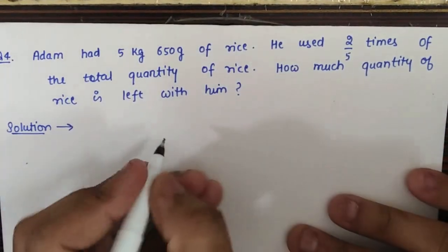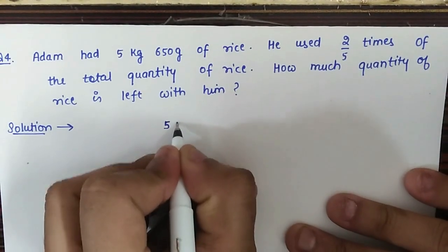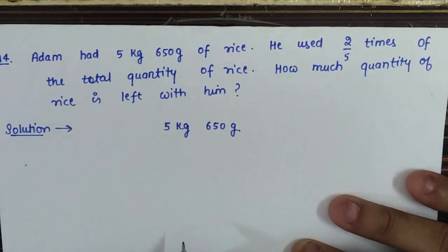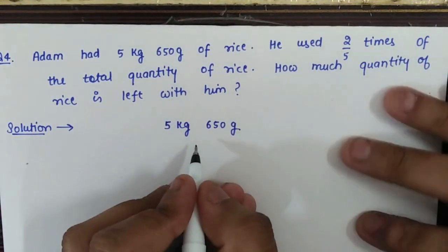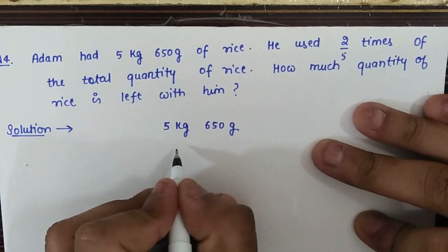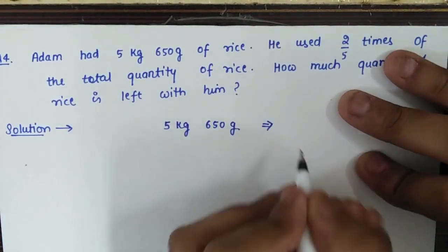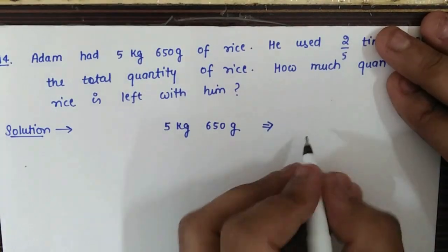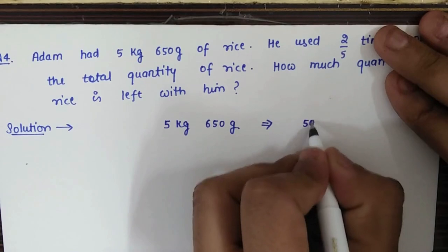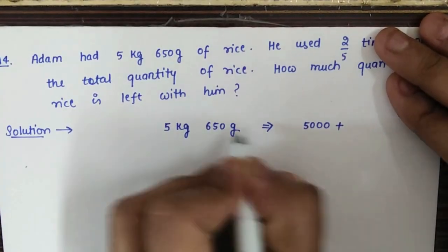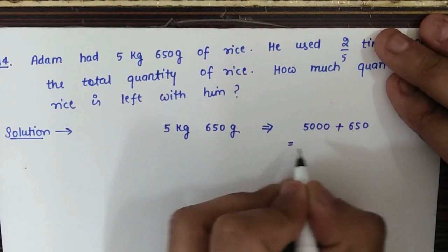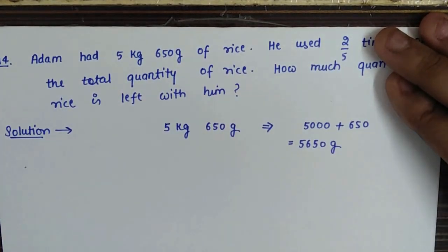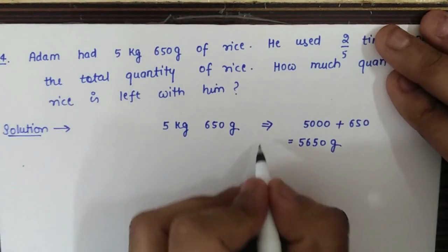Let's discuss question number four. Adam initially has 5 kilograms 650 grams of rice. To proceed with the question, we will convert all this quantity to grams. One kilogram equals 1000 grams, so 5 kg equals 5000 grams. Adding 650 grams, the total quantity is 5650 grams.